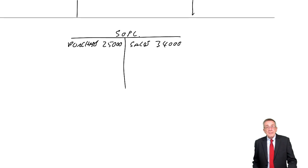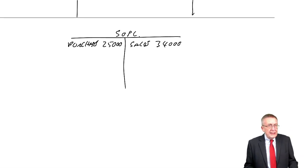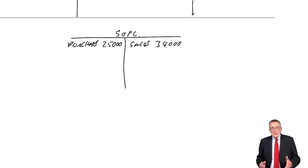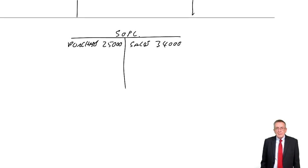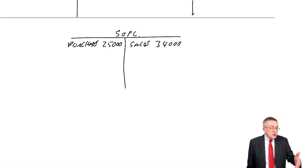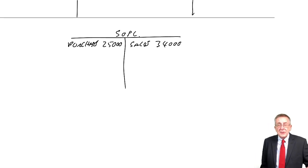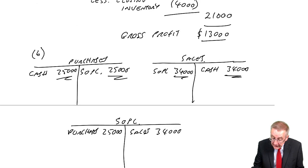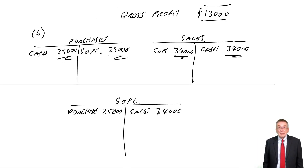The other problem is that we do have inventory at the end of 4,000, and inventory is an asset which appears in the statement of financial position. But the statement of financial position is a list of the balances on the accounts, and we've no balance there for inventory. You can't list a balance if there isn't one.